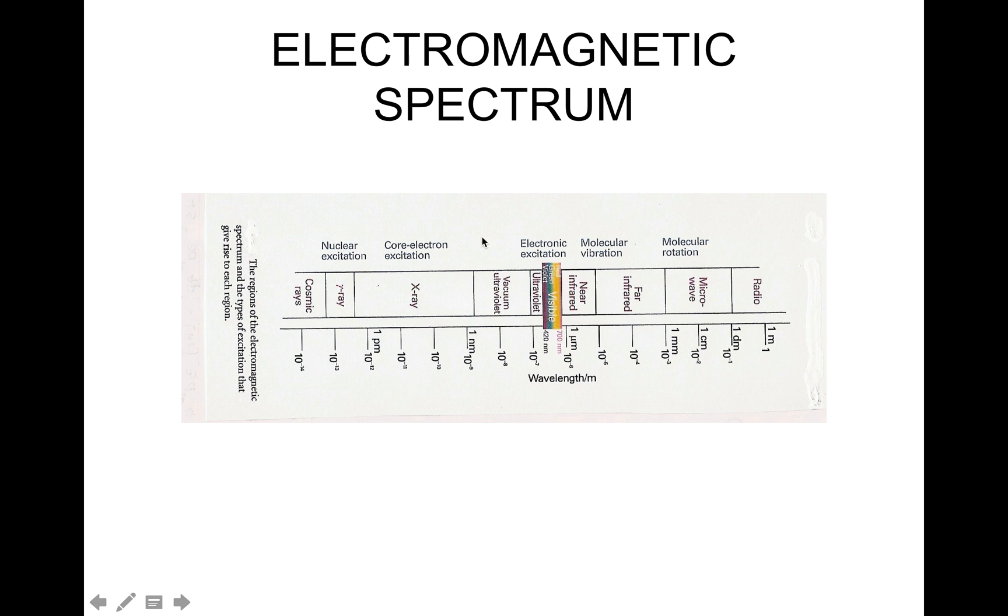The diagram shows on the extreme right we have the radio waves whose wavelength is about one meter, then microwave, then far infrared and near infrared, and we finally come to our well-known visible region. We then go to the ultraviolet, vacuum ultraviolet, x-rays, gamma rays, and cosmic rays.